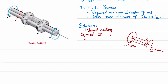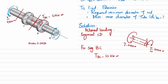Now for segment BC, if we cut it here, there is the centerline and a torque T equal to 10 kilo-newton-meter. To maintain equilibrium, we have an opposite torque T_BC, which is also equal to 10 kilo-newton-meter. So T_BC equals 10 kilo-newton-meter. Now we have the torque in each segment, so we will apply the allowable shear stress formula.